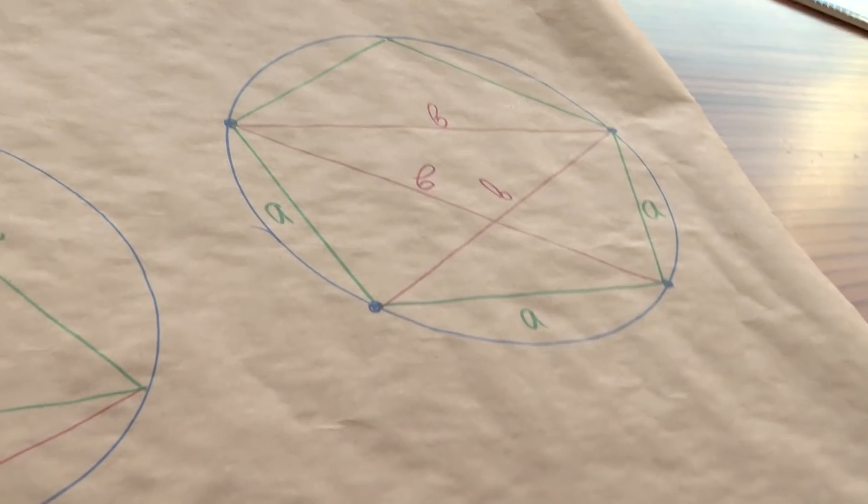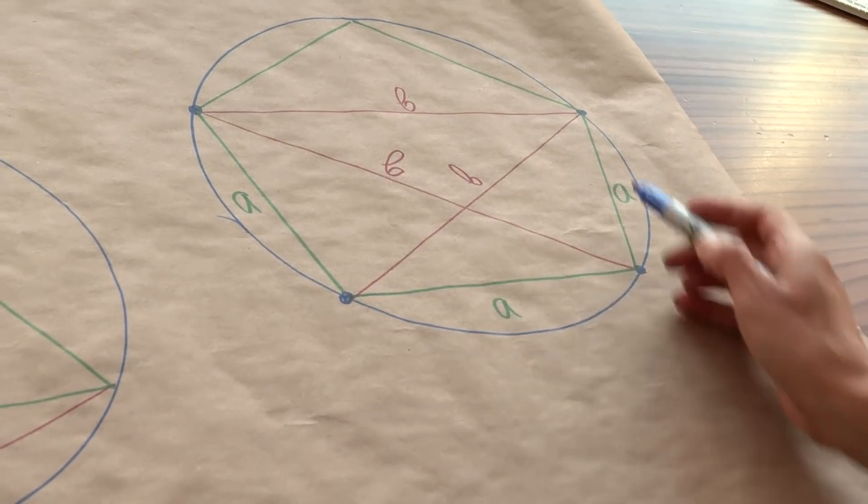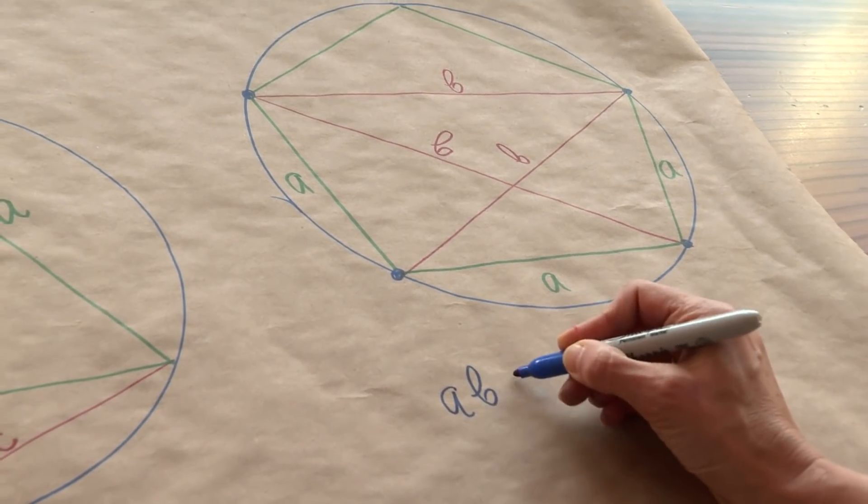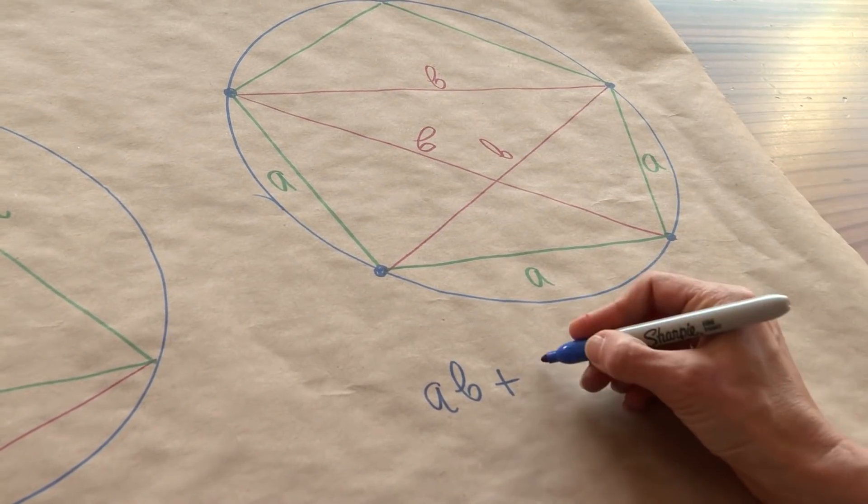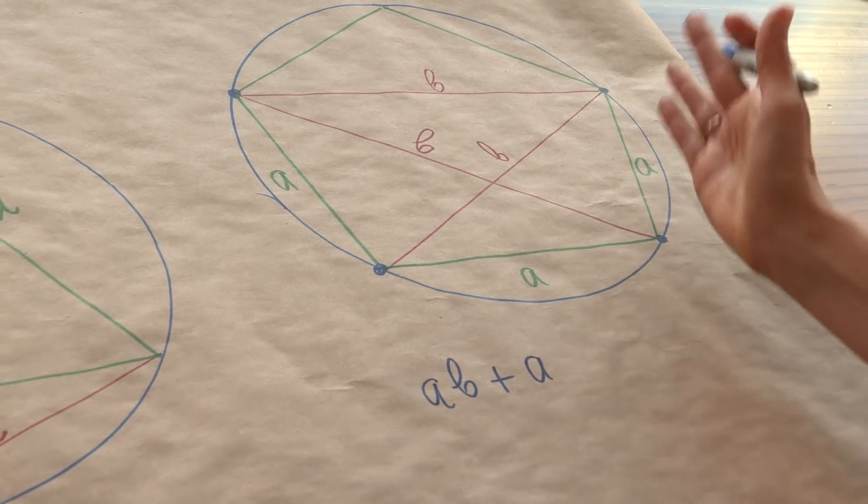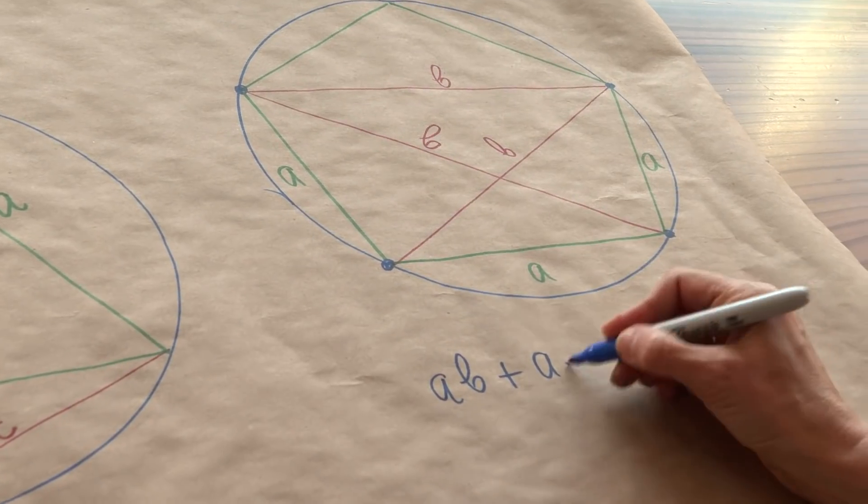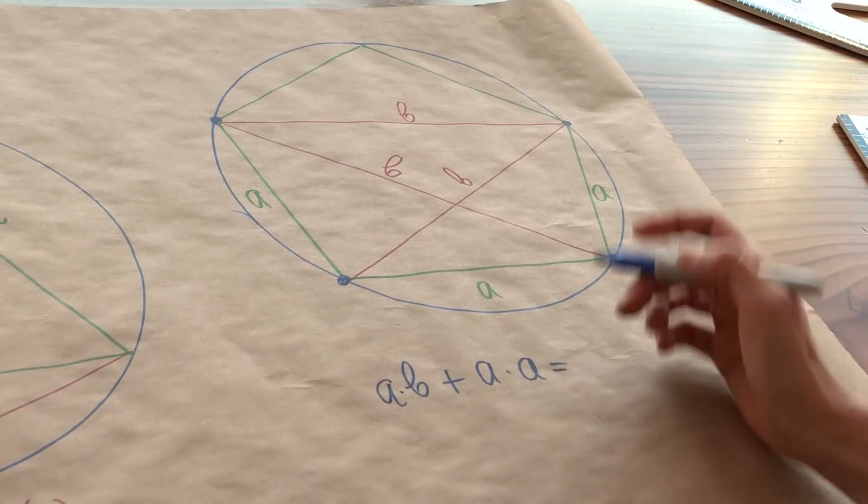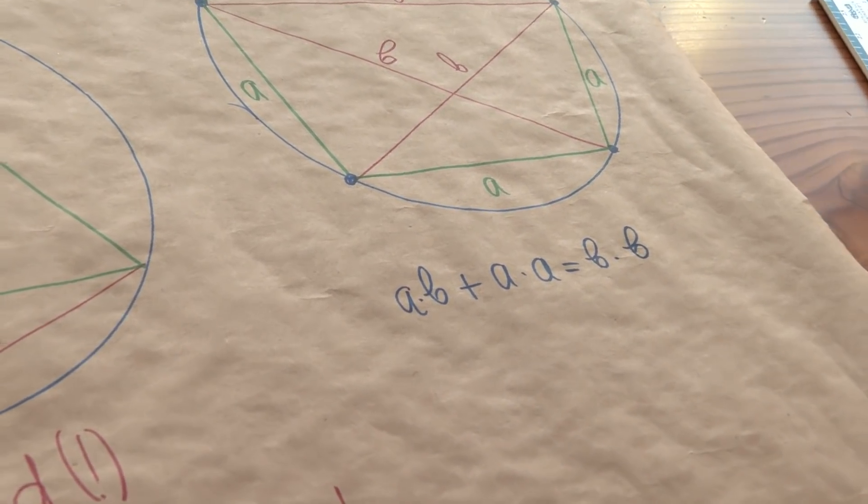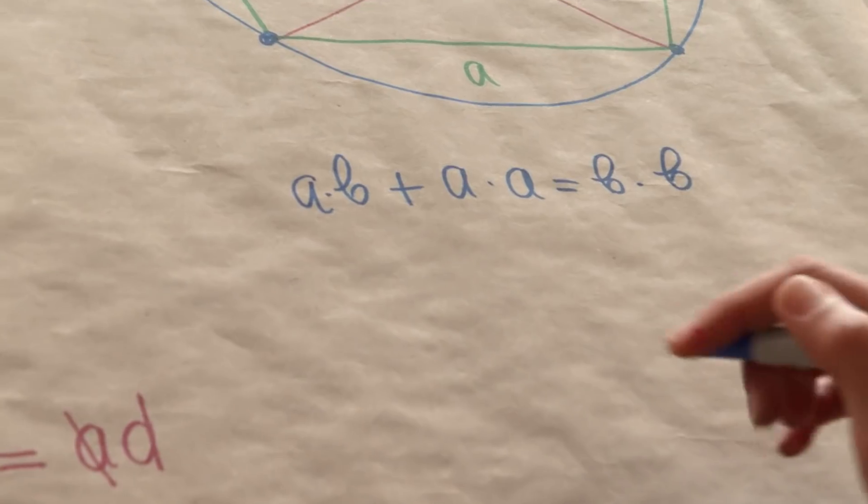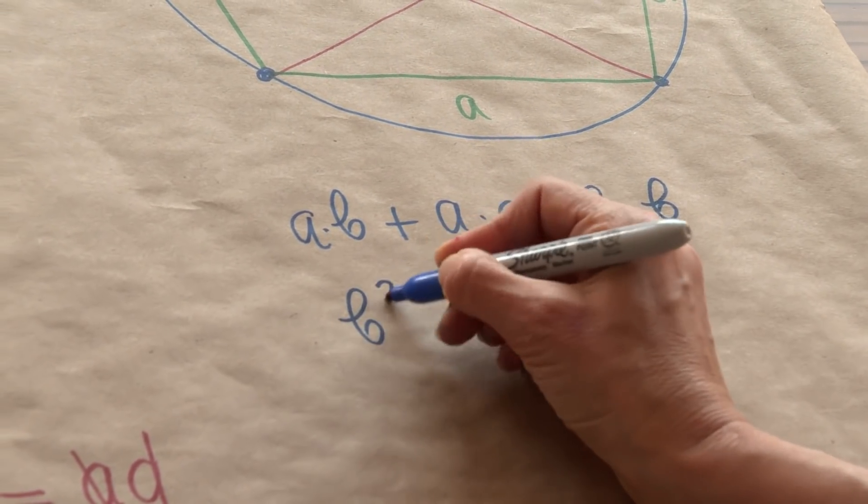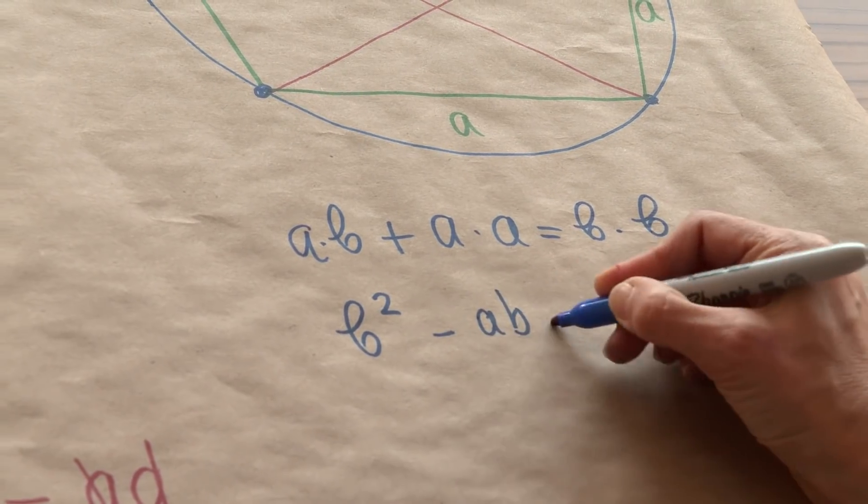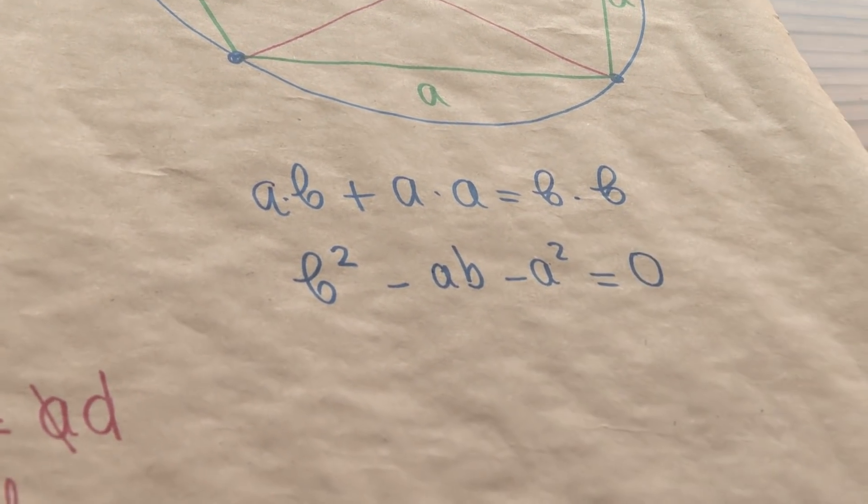So Ptolemy tells us about this bottom quadrilateral, that if I multiply the opposite sides, so A times B, and the other opposite sides, A times A, I'm going to get the product of the two diagonals, which is B times B. Excellent. Let's put everything on one side.